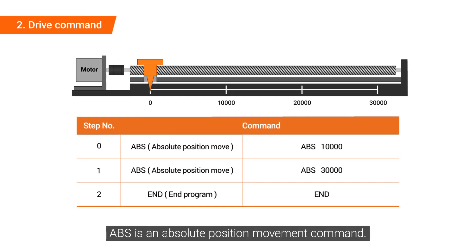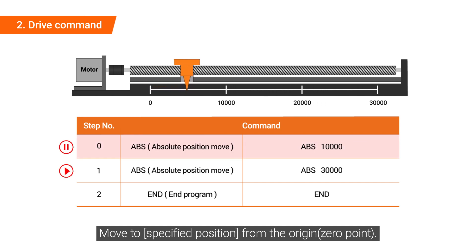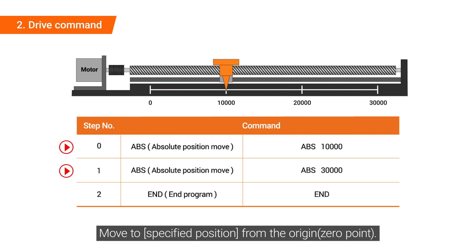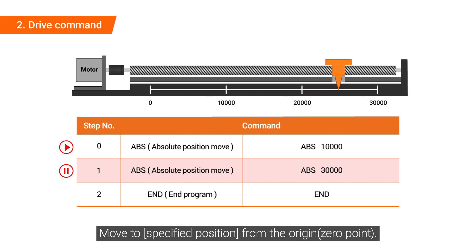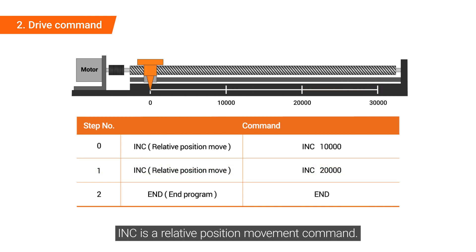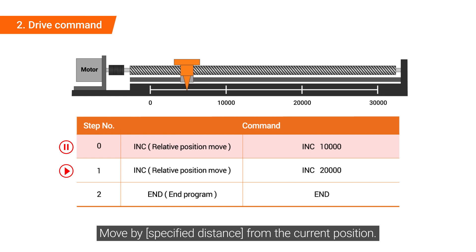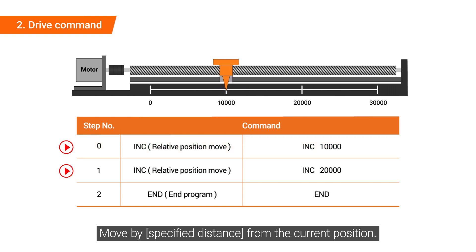ABS is an absolute position movement command that moves to a specified position from the origin. INC is a relative position movement command that moves by a specified distance from the current position.